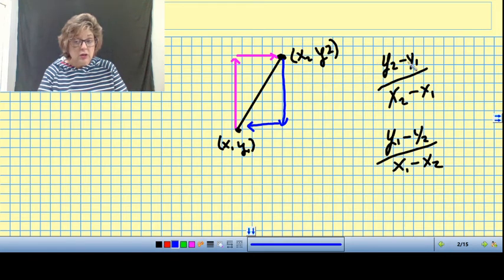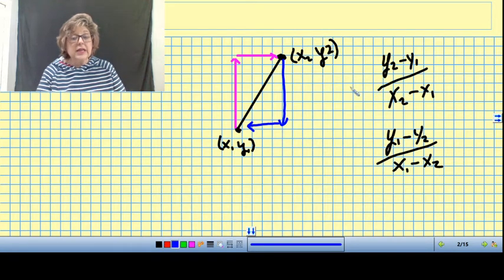So I'm still changing the y's over changing the x's. The difference of the x from one point to the other. Remember, it's not going to matter if I start at the left point and count to the right, or if I start at the right point and count to the left. Our slope must be the same. So remember, this just means first point, that's first point, second point, or second point, first point. It doesn't matter the order as long as we are constantly consistent in the way we write them.